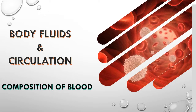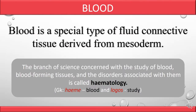In this video we will discuss blood — its components and composition. Blood is a special type of fluid; it is a connective tissue derived from mesoderm during embryological development. The branch of science concerned with the study of blood, blood-forming tissues, and associated disorders is called hematology.